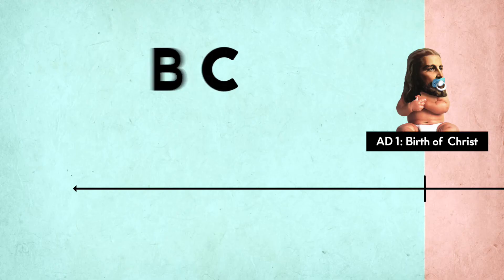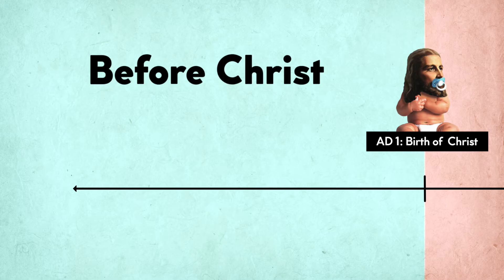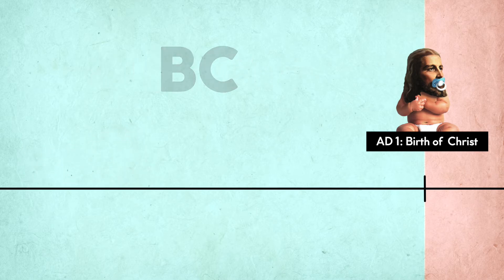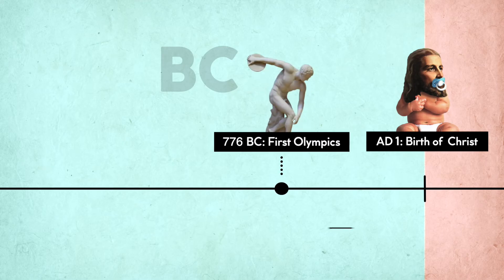Now that we understand AD, let's talk about BC. BC stands for before Christ, because BC is all the years before the birth of Christ going back to the start of humanity. BC dates are calculated by how many years something happened before the birth of Christ. For example, the first Olympics were held in 776 BC, meaning it happened 776 years before the birth of Christ.